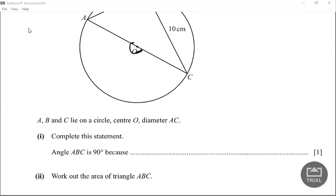I'll type it out. Wait, so angle at circumference half angle at center. Alright, now work out the area of triangle ABC.